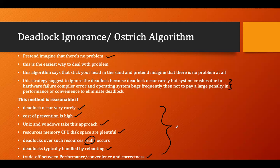So, to recap the ostrich algorithm: if there is a storm in the desert, what the ostrich will do is put its head into the sand and assume that no storm is coming. This particular behavior has been taken as a method and is called deadlock ignorance, or the ostrich algorithm.